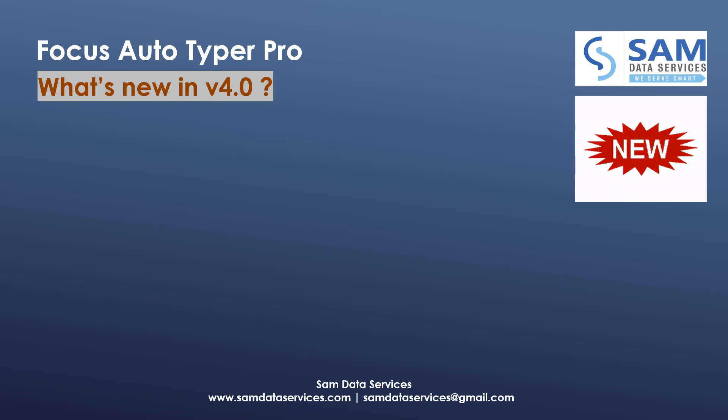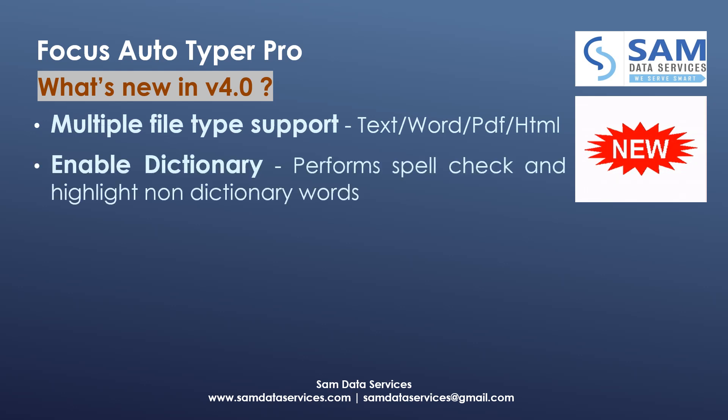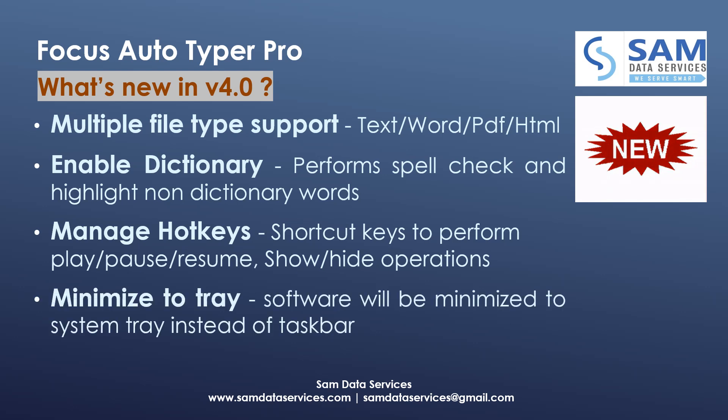Let's see what's new in version 4.0. Multiple file types support including text, Word, PDF, and HTML. Shortcut keys to perform play, pause, or resume options. You can also show or hide the auto typer window on screen. Enable dictionary to perform spell check and highlight words. The auto typer window can also be minimized to the system tray.